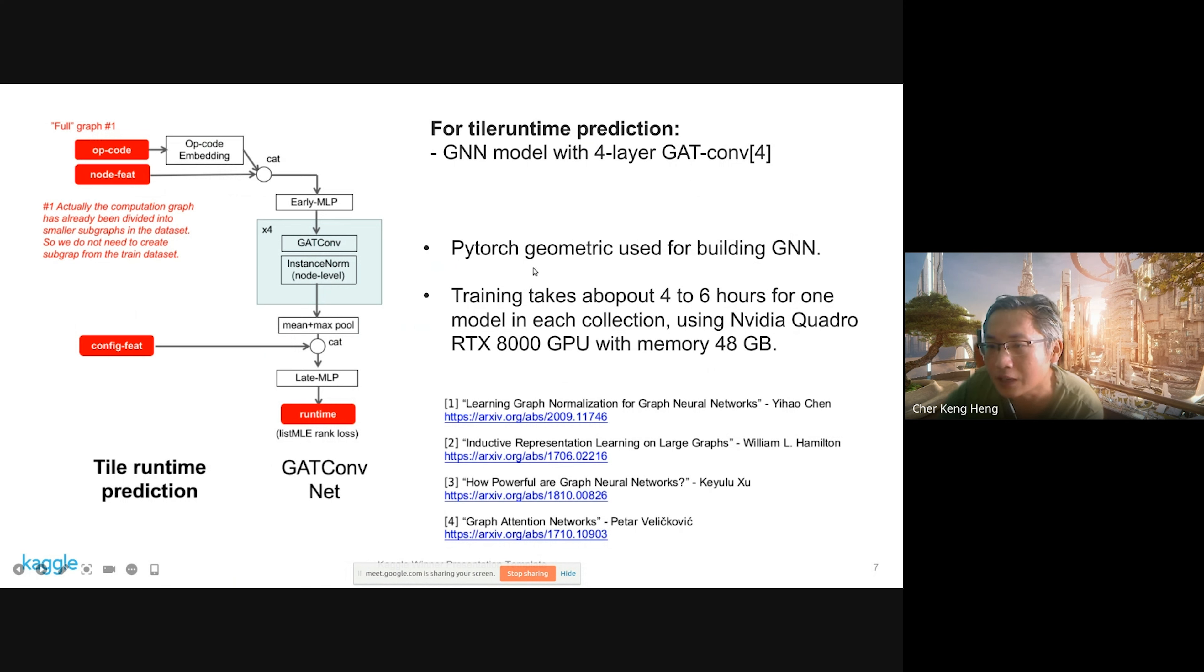I use PyTorch Geometric to build the GNN. Training takes about four to six hours for one model in each collection. I'm using a Quadro RTX 8000 GPU with 48 gigabytes of memory. These are the reference materials. If you're interested in graph normalization, you can read this paper.